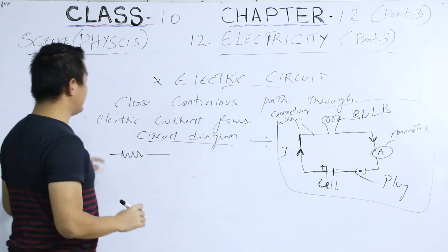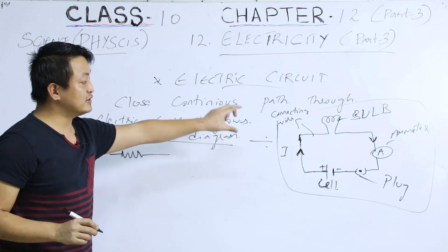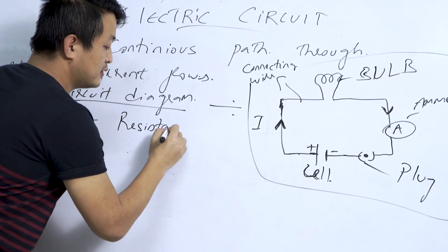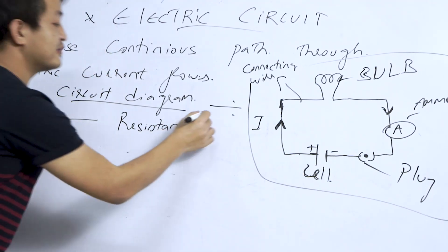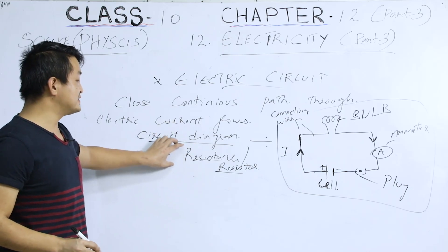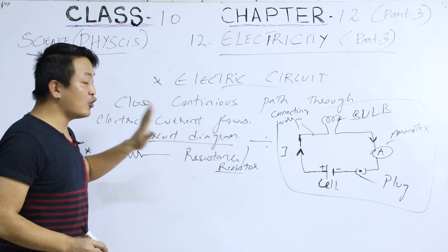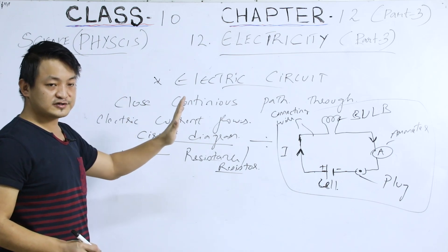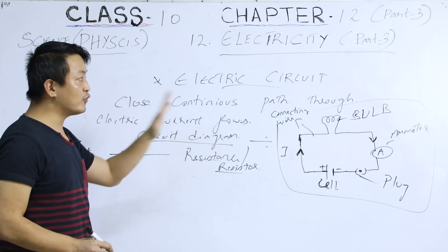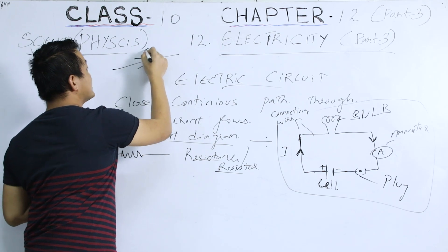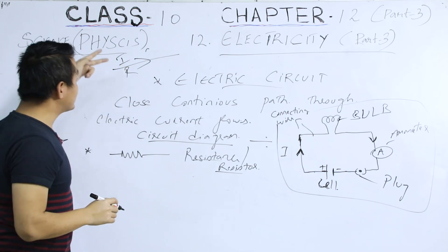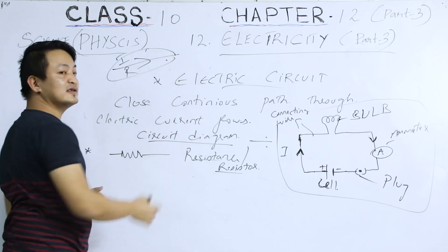There are certain symbols used to make a circuit diagram. This is the symbol for resistance, also known as a resistor — resistance and resistor are the same thing. Resistance is used to oppose or resist the flow of charge. If there is current flowing, there will also be resistance. Presence of current means presence of resistance.